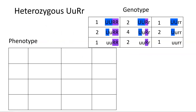From there, we're going to look at phenotype, which is physical expression. Since U is a dominant gene, anything that has just one capital U is going to express that dominant characteristic. Similarly, one capital R is going to be dominant. I've coded the capital Us blue and the capital Rs purple. The capital U, U combinations go across the top; capital U, lowercase u are in the second row; and lowercase u, u are in the third row. Capital R, R is in the first column; capital R, lowercase r is in the second column; and lowercase r, r is in the third column.